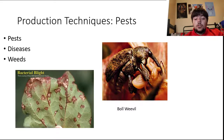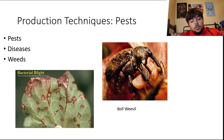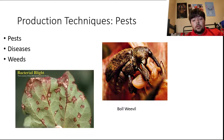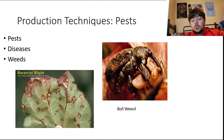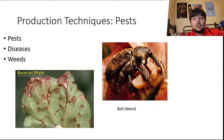Some diseases cotton endures include bacterial blight, cotton root rot, bronze wilt, and nematodes. Weeds can also steal nutrients vital to plant growth. Some easy ways to avoid pest infections and weeds include crop rotation, planting weed-free seeds, planting disease-free seeds, and spraying pesticides and fungicides.